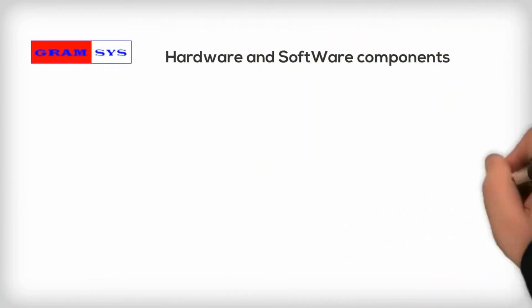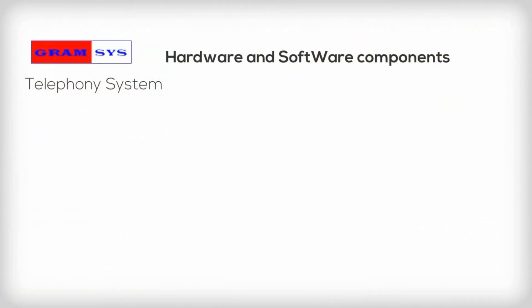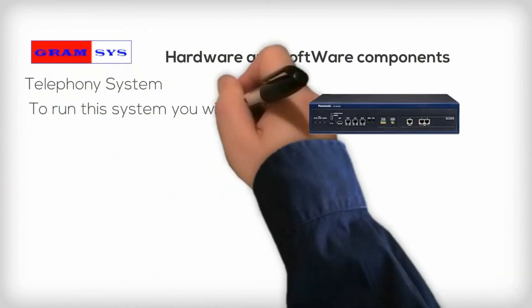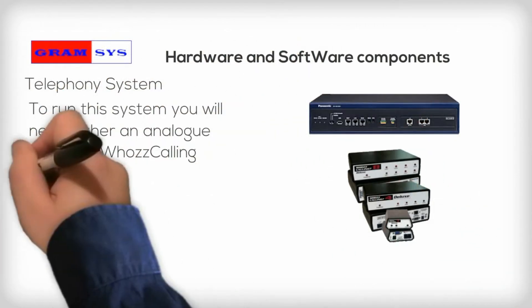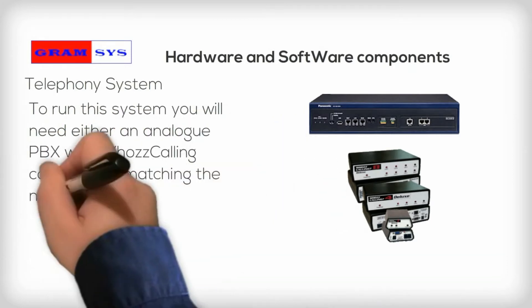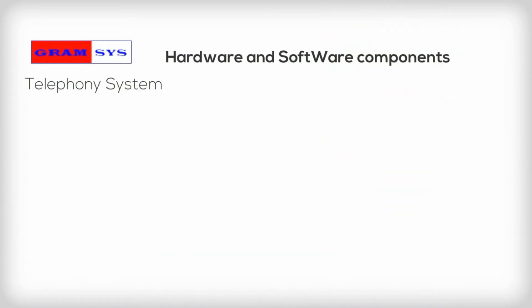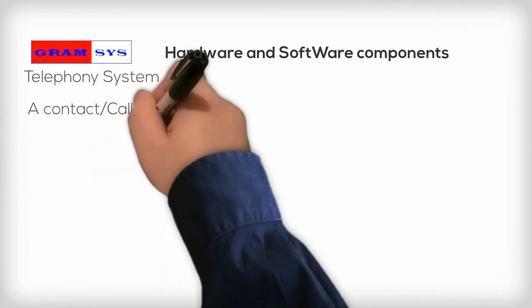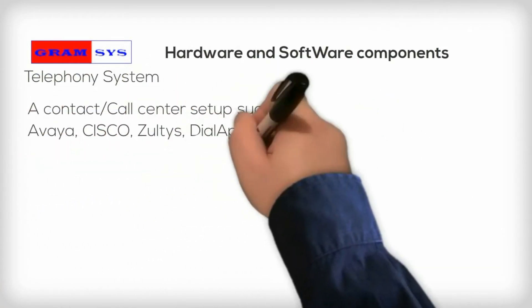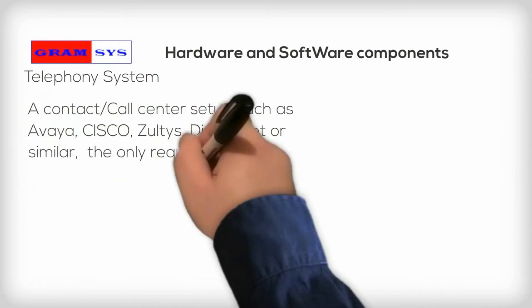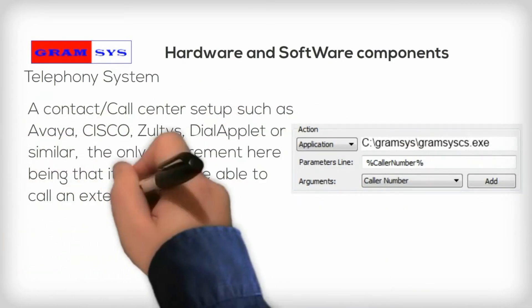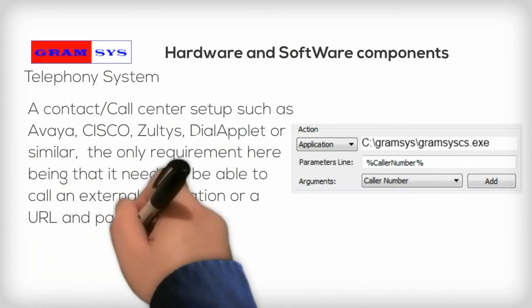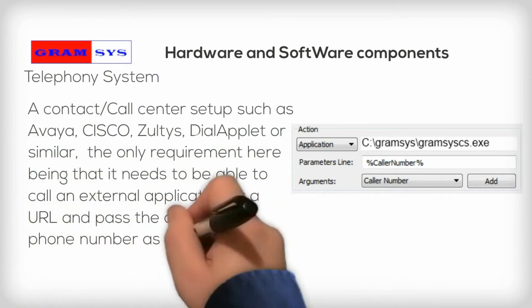Hardware and Software Components. Telephony System: To run this system you will need either an analog PBX with a caller ID box matching the number of call agents, or a contact call center setup such as Avaya, Cisco, Zultis, Dial Applet or similar. The only requirement is that it needs to be able to call an external application or a URL and pass the customer's phone number as a parameter.